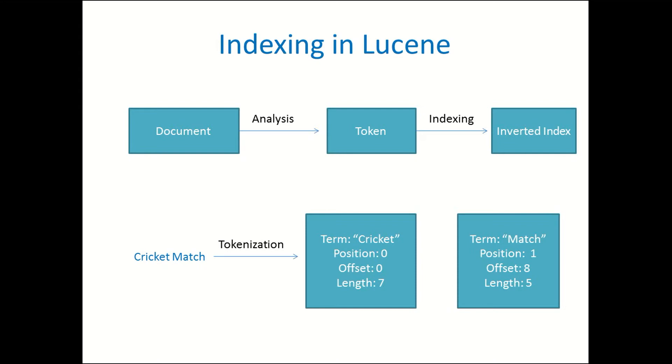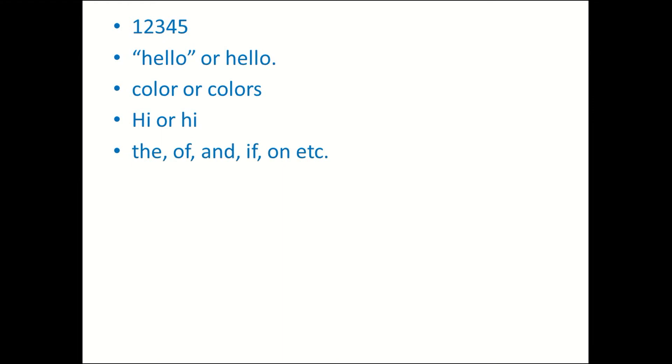When asked what is a token, you may answer that every term found in the document is a token, but that is not the case. What about a number, or special characters? 'Hello' with inverted commas and 'hello' with a full stop are contextually the same thing — we cannot consider them unique terms. What about spelling variations like 'color' or 'colors', 'fruit' or 'fruits'? These are the same terms. Capitalization and stop words like 'though', 'the', 'of', 'and', 'if' must also be handled — if we consider stop words in indexing we may end up with a very bad index. These things are taken care of by the analyzer.